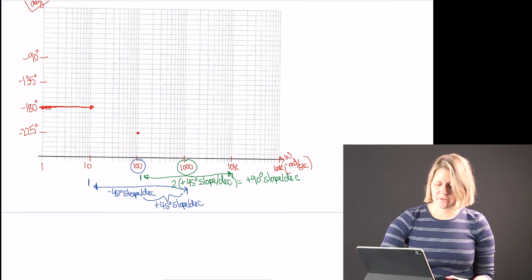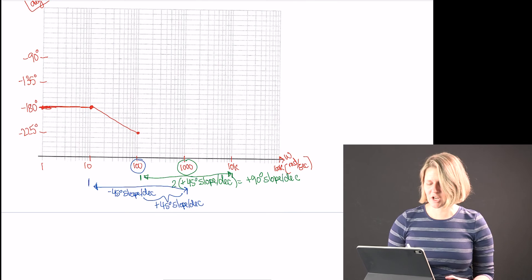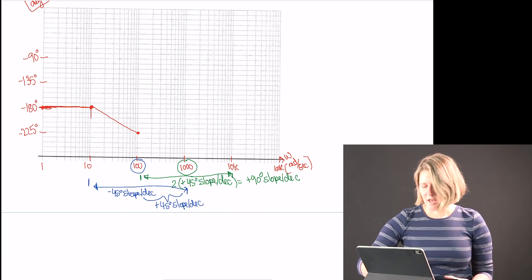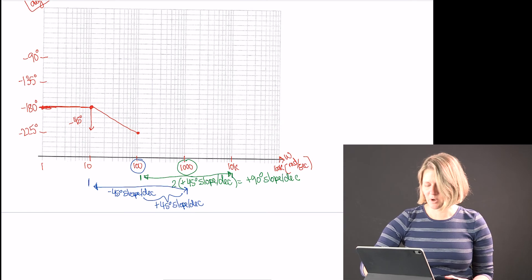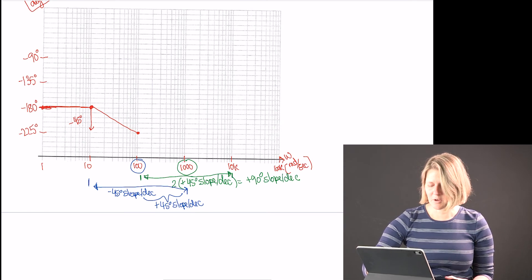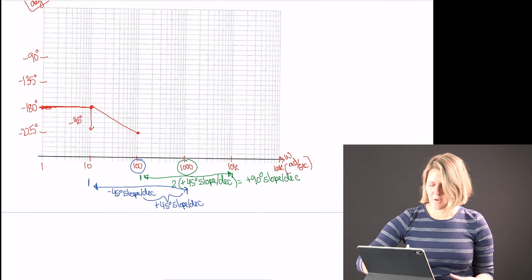So this gives me a minus 45 degree change within there. And then I have an effective plus 45. So I go back up to minus 180.